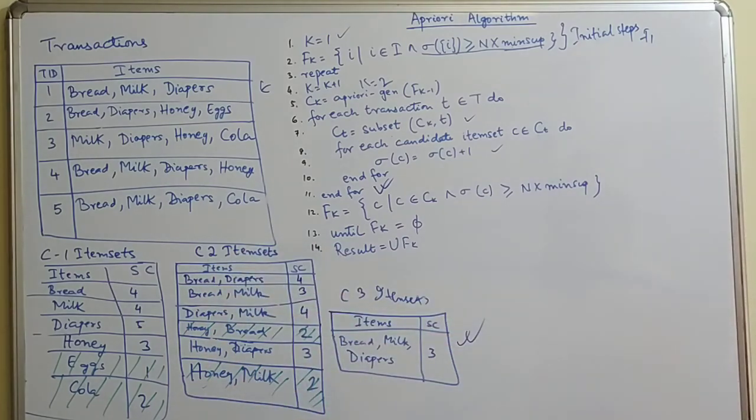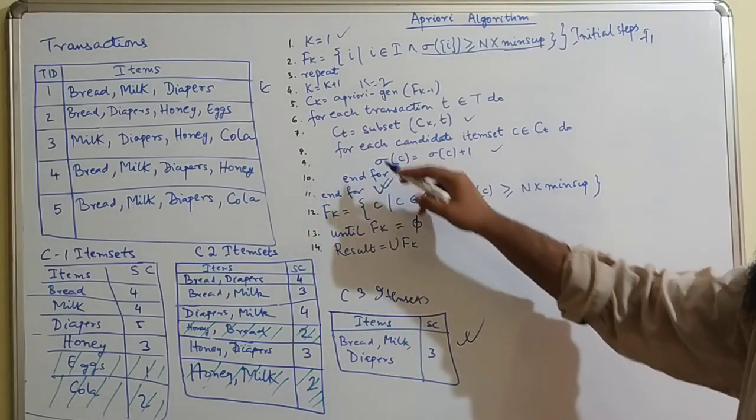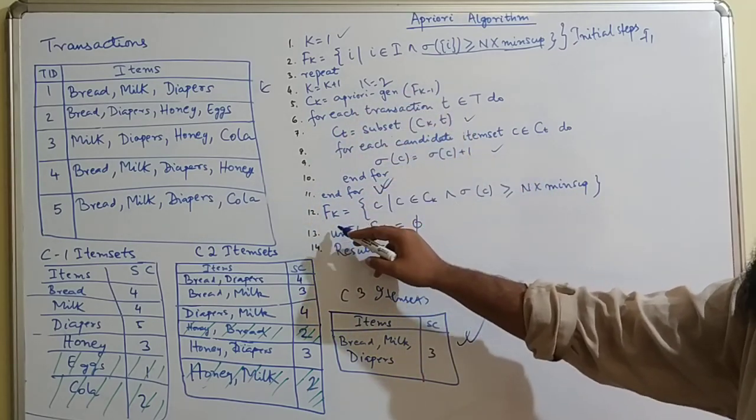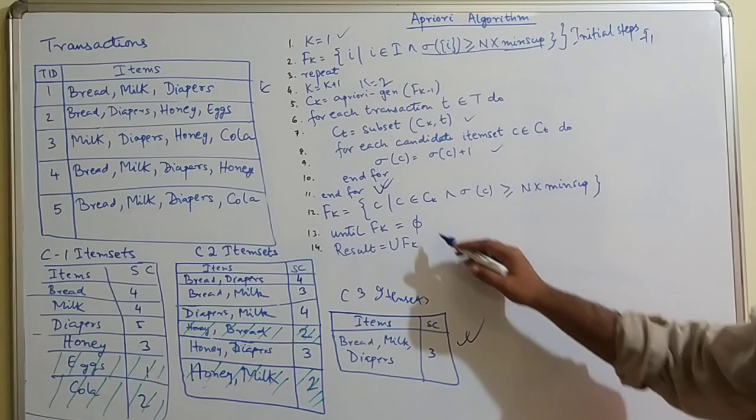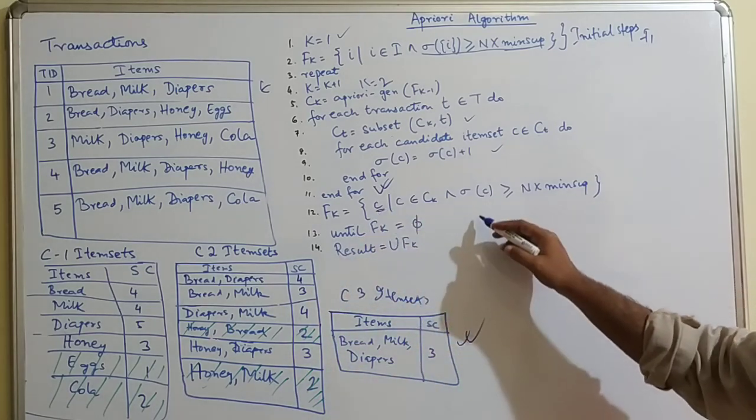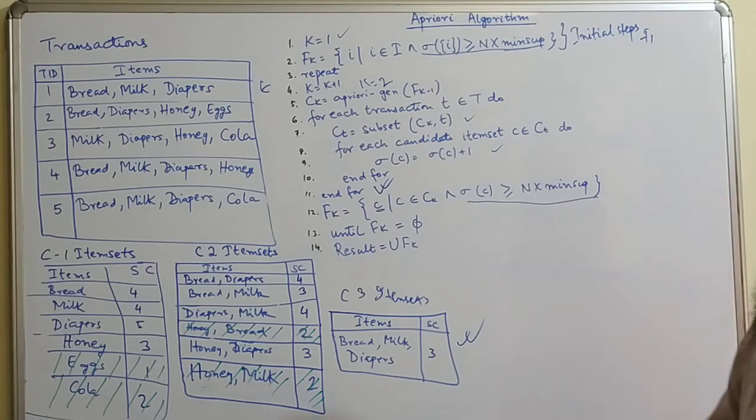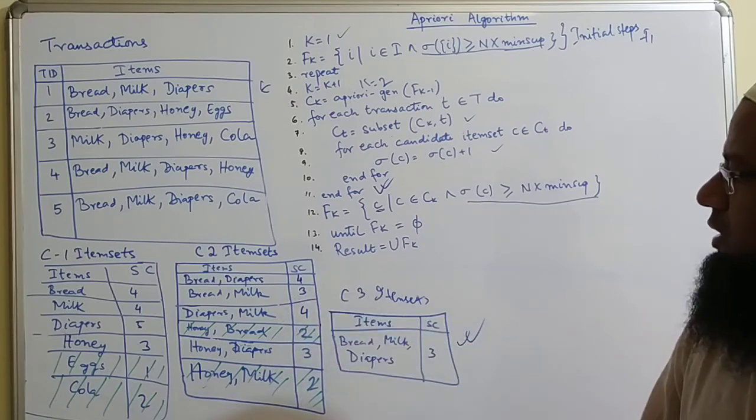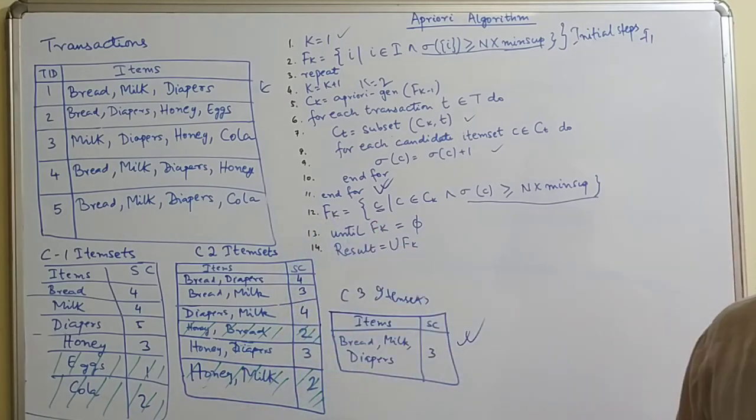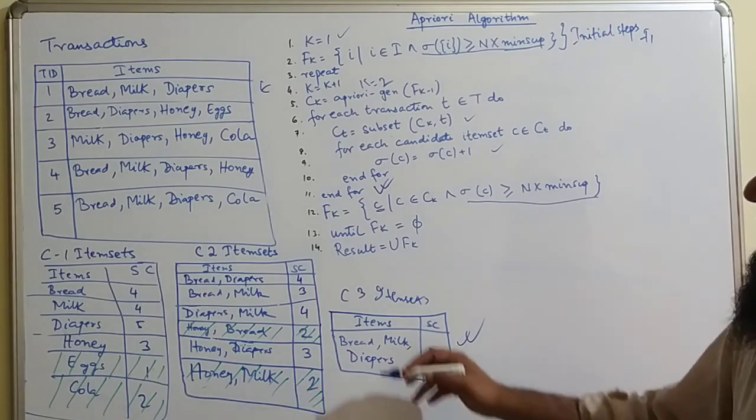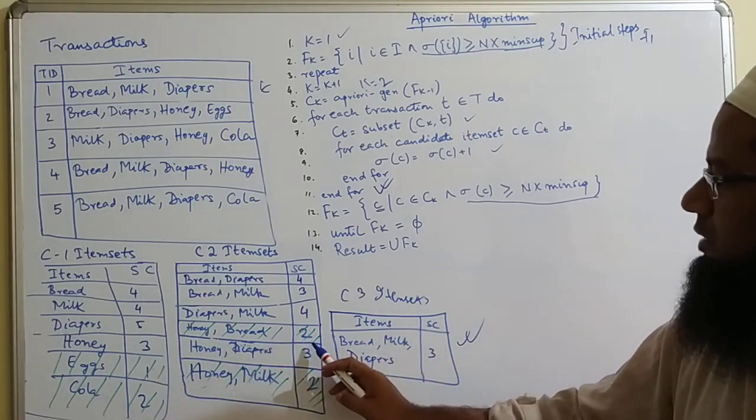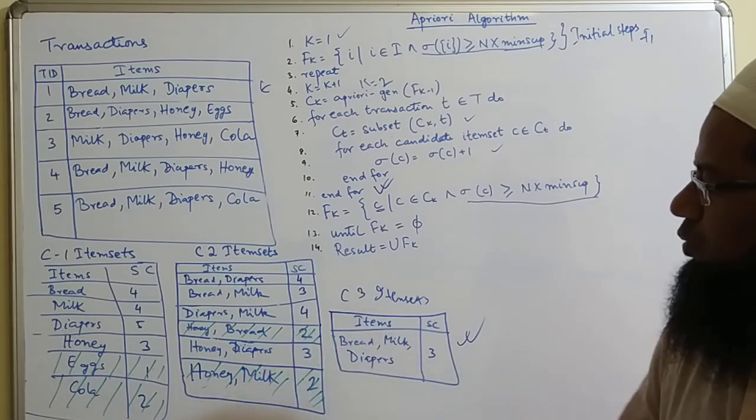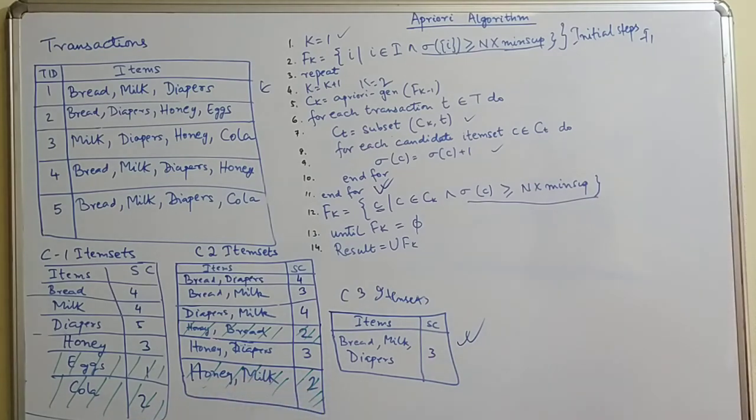Once this loop is over, you get the support count for all the candidate 2 item sets. Then you have f of k, here k equals 2. What is your frequent 2 item set? It equals those candidate item sets that satisfy this condition. Whichever support is more than 3 or more will become part of your f2 item set. We see that honey and bread has a support of 2, which is less than 3, so it will not be included, and honey and milk also will not be included.